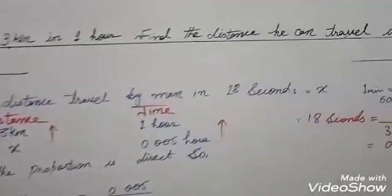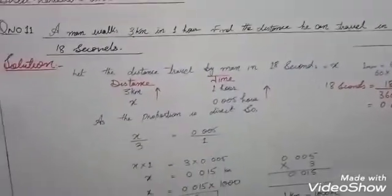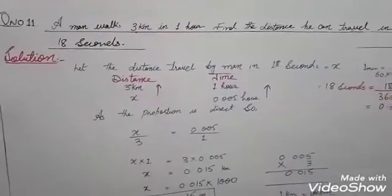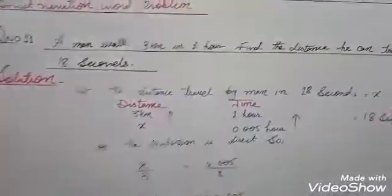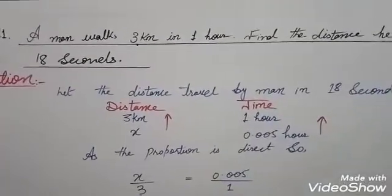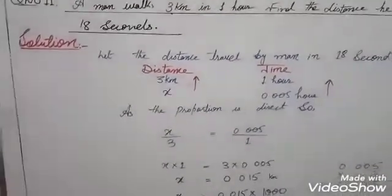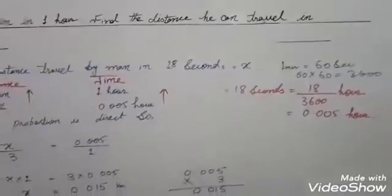Let the distance travelled by the man in 18 seconds be equal to x. We know distance is 3 km and time given is 1 hour. For x distance, the time is 0.005 hours — but first we need the unit conversion for one hour.